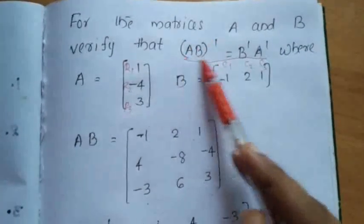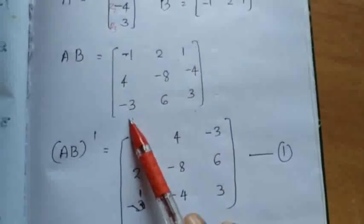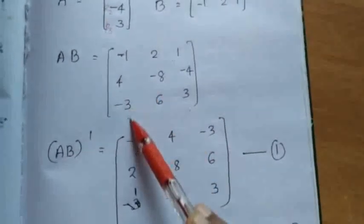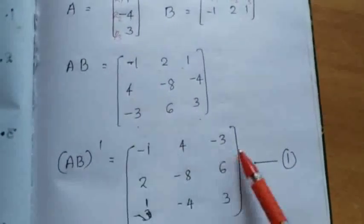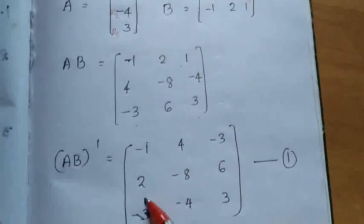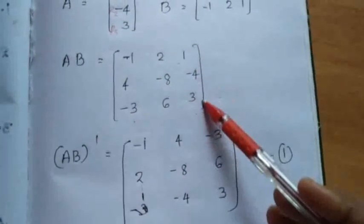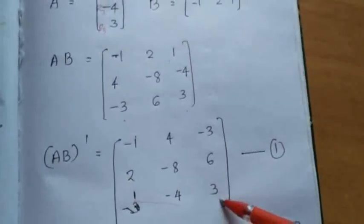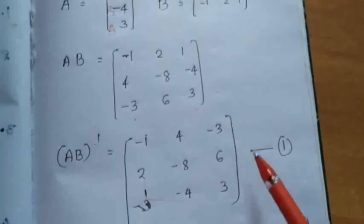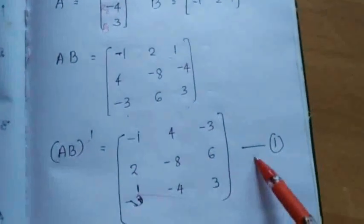We need to find (AB) transpose. So we take the transpose of AB by changing columns to rows. The first column of AB is [-1, 4, -3], which becomes the first row. The second column [2, -8, 6] becomes the second row. The third column [1, -4, 3] becomes the third row. We have got (AB) transpose — we denote this as equation one.